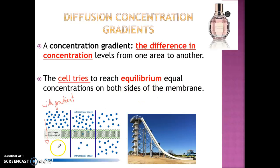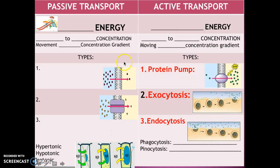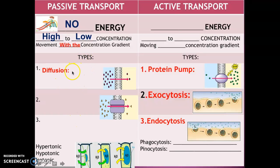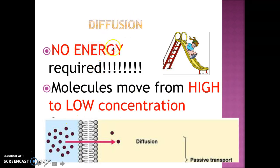The cell membrane wants to make the concentrations equal on both sides. Passive transport requires no energy. We're going from high concentration to low concentration, and it is the movement with the concentration gradient. There are three types: diffusion, facilitated diffusion, and osmosis. Diffusion requires absolutely no energy, and it is the movement of molecules from high concentration to low concentration across the phospholipid bilayer.